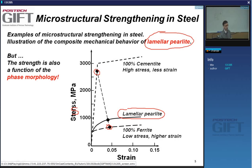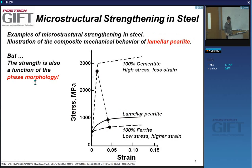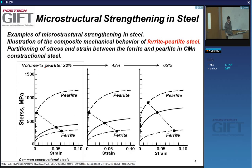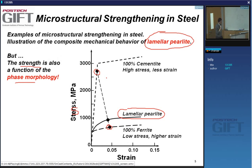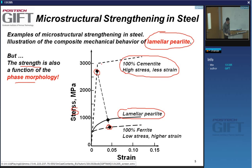It's not only the strength of the separate phases that's important, but also the phase morphology. Typical lamellar pearlite, of course, is a composite and doesn't have a stress-strain curve of gigapascals — it has a UTS of around 1000 megapascals.